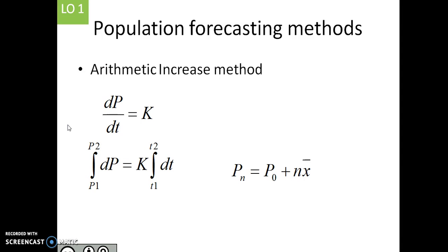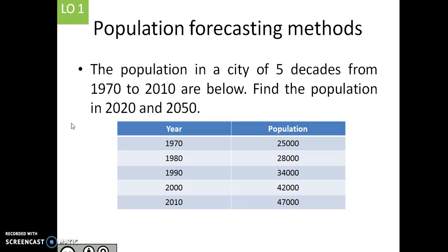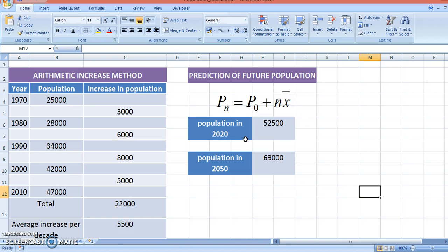The data is shown here. Population in a city of five decades is given, and we can estimate or forecast the population in many other given years. The arithmetic increase method says, for each decade of population, what is the increase in population compared to the previous one? We can calculate this term directly, like 28,000 minus 25,000 is 3,000. We do for each of the term in series to get the increase in population between any two decades. Now, we find out what is the average increase per decade. We take the total sum and divide it by the number of terms in series to get the average increase per decade.